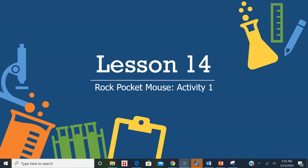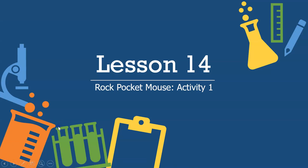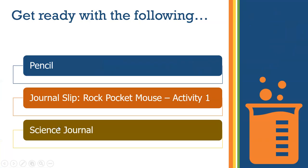It's lesson 14 Science 7, and in this lesson we're going to explore one of our last examples of evolution. Today you're going to need a pencil, the journal slip, and your science journal.